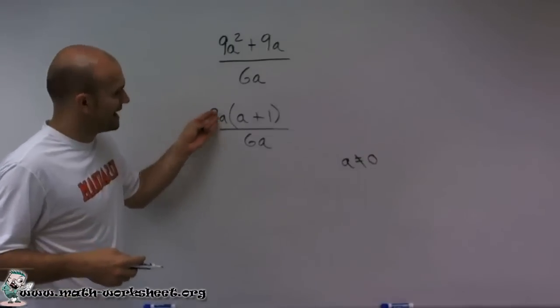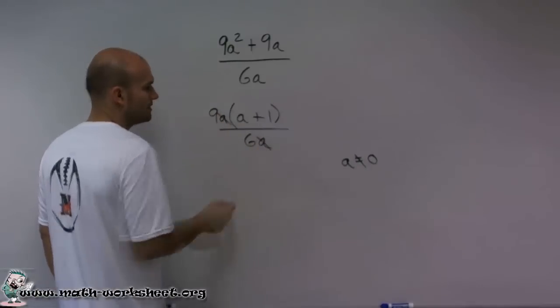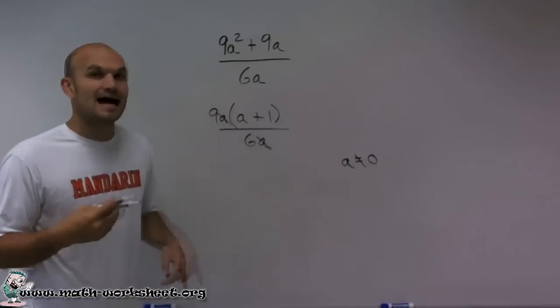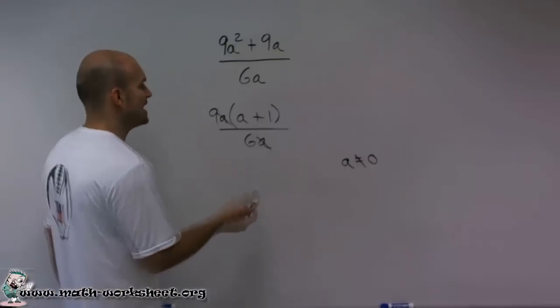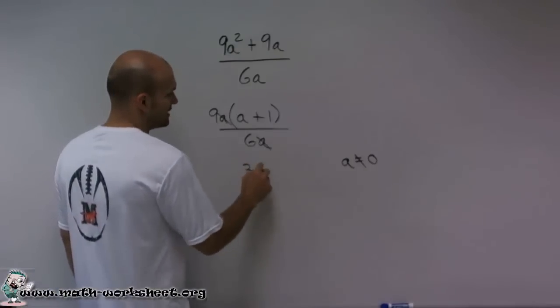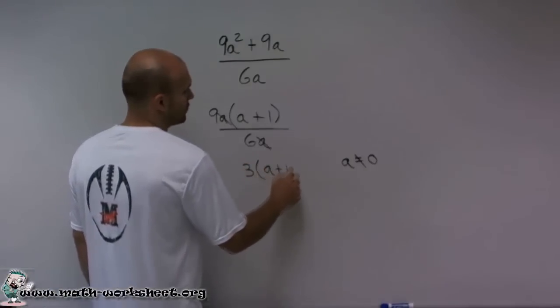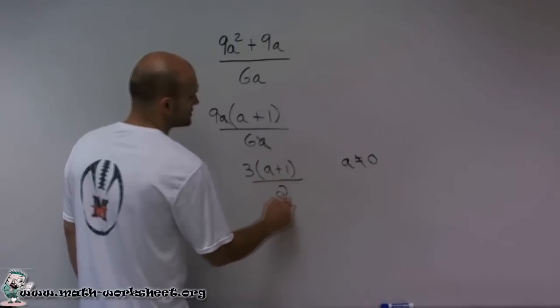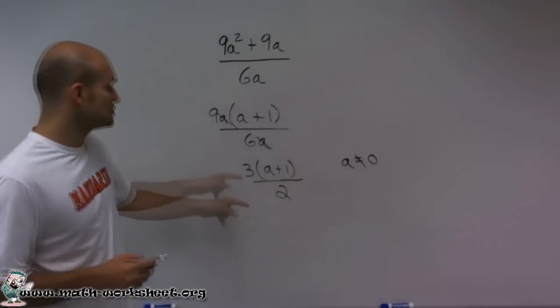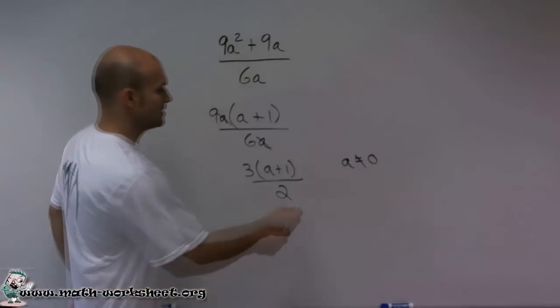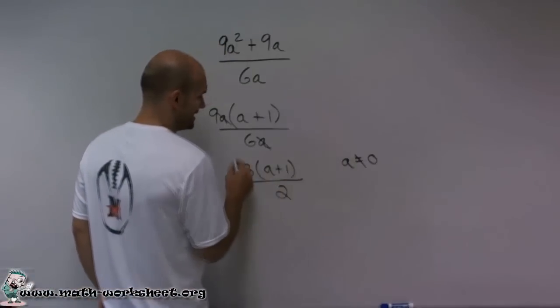Now I have a divided by a, which is going to leave me with 1. And then 9 sixths, I can reduce that fraction to 3 halves. So I have 3 times a plus 1 divided by 2 would be my simplified version of this problem where a cannot equal 0.